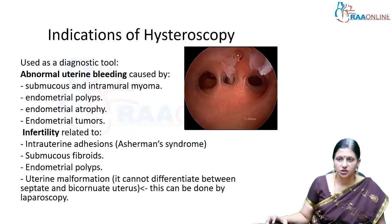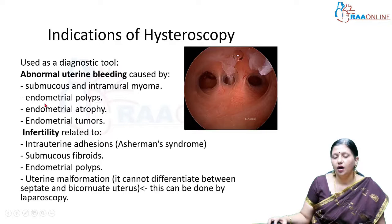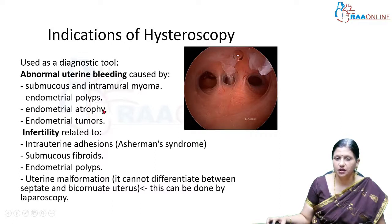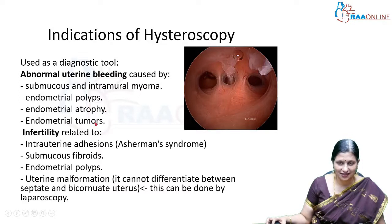What are the indications of hysteroscopy? It has been used as a diagnostic tool for abnormal uterine bleeding, which can be caused by submucosal or intramural fibroids or myomas, and endometrial polyps. It can also be used to diagnose endometrial atrophy causing abnormal uterine bleeding, and endometrial cancers.